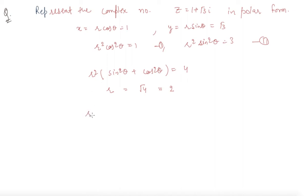Now we will find out the value from r cos theta equals 1. Cos theta is coming out to be 1 by 2, putting the value of r. Cos theta equals half means theta equals 60 degrees.